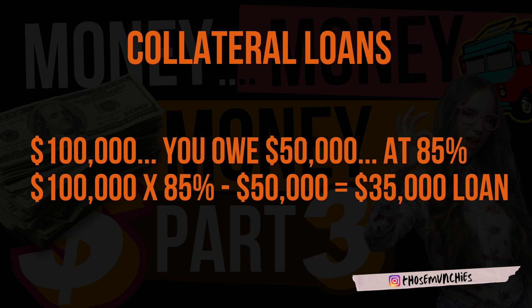Using the same house example worth one hundred thousand dollars with fifty thousand owed: if the bank does the loan at 85% LTV, they'll lend you eighty-five thousand on a hundred thousand dollar house. The difference between your mortgage balance and the LTV amount is thirty-five thousand dollars. If the loan went bad, they have a hundred-thousand-dollar house to sell and can recoup the eighty-five thousand at a profit. So understand that collateral loans are ideally going to be in the 75 to 85% range — calculate that amount and subtract any existing mortgage to determine what cash you can receive.